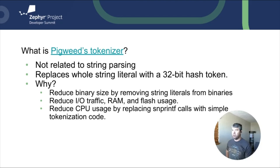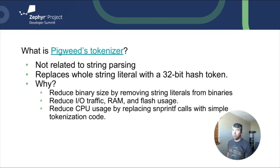So what is Pigweed's Tokenizer? It's not a string parser like strtok. It's a compile-time tool that will replace string literals with a 32-bit hash token. Some benefits of this are reducing your binary size, as you're removing string literals from your binary and replacing them with this 32-bit token. It would also reduce I/O traffic, RAM, and Flash usage.